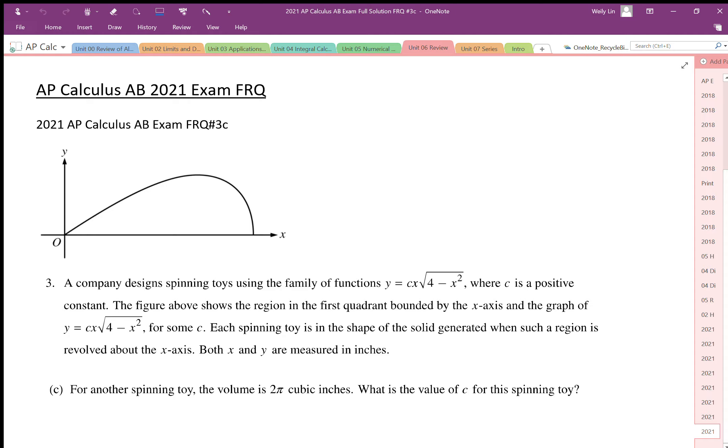For question 3c, it says for another spinning toy the volume is 2π cubic inches. So what's the value of c for this spinning toy? To do this, we're going to spin this around and use this as our radius.